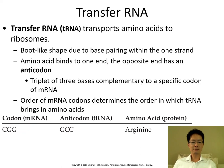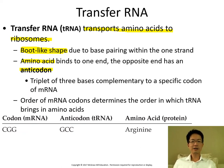Now we talk about transfer RNA. Transfer RNA's function is to transport amino acids to the ribosome. It has a boot-like shape. One end carries the amino acid; the other end carries something called the anticodon. Remember: the anticodon is on transfer RNA, and the codon is on messenger RNA. Do not mix up the two.